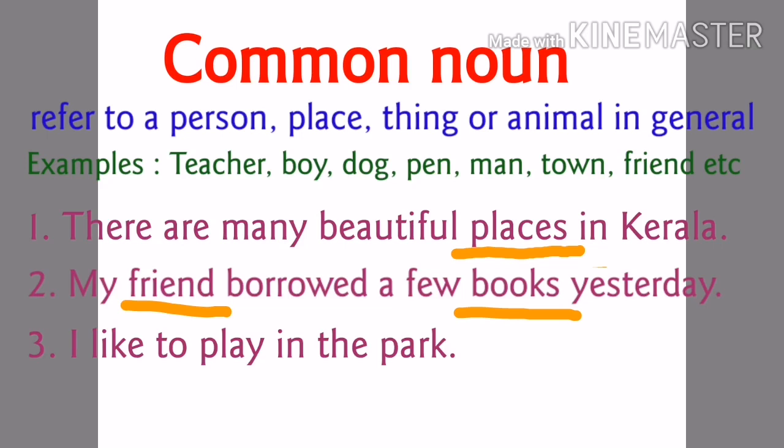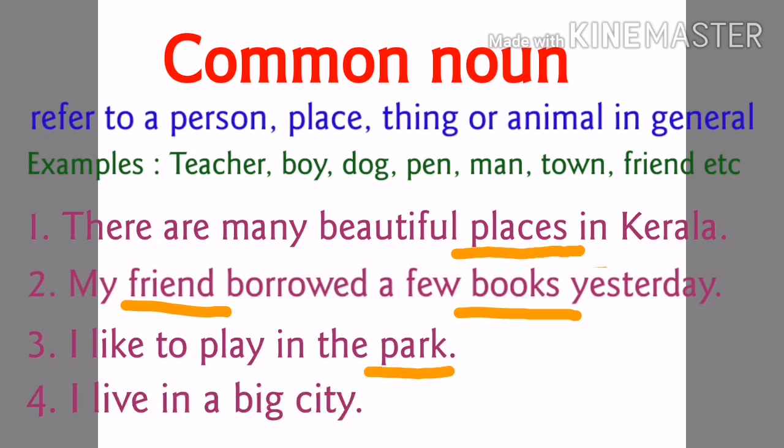See the next sentence: I like to play in the park. In Kerala there are many parks — for example Vandala, Dream World, and even in our school there is a park. Each park has its own name, but generally we call them as park. So here park is the common noun. Next sentence: I live in a big city. Here the city's name is not mentioned — it can be a city in Kerala or Bangalore or anywhere. So city is the common name attributed to a place, and city is the common noun.